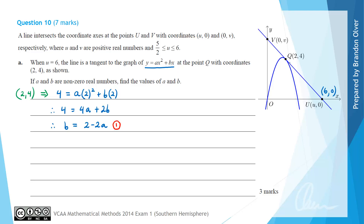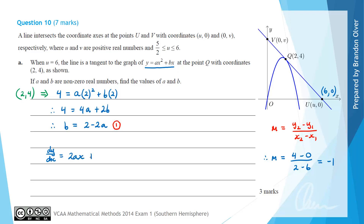Next, we calculate the gradient of the line segment joining Q and U. Using the gradient formula (y₂ − y₁)/(x₂ − x₁), the gradient equals (4 − 0)/(2 − 6) = 4/(−4) = −1. To relate this to the parabola, we calculate the derivative: dy/dx = 2ax + b. Since the gradient equals −1 at x = 2, we get −1 = 2a(2) + b, so −1 = 4a + b. We call this equation 2.